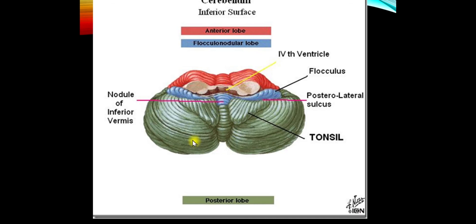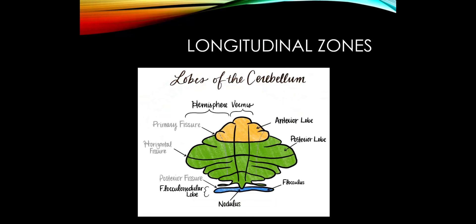Here are a few drawings. In green we can see the posterior lobe. Here's the vermis, which makes up a large portion of the anterior lobe, and then we have the flocculus and the nodule — the flocculonodular lobe. Another representation shows how much of the vermis makes up the anterior lobe, the very large posterior lobe, and the flocculonodular lobe.